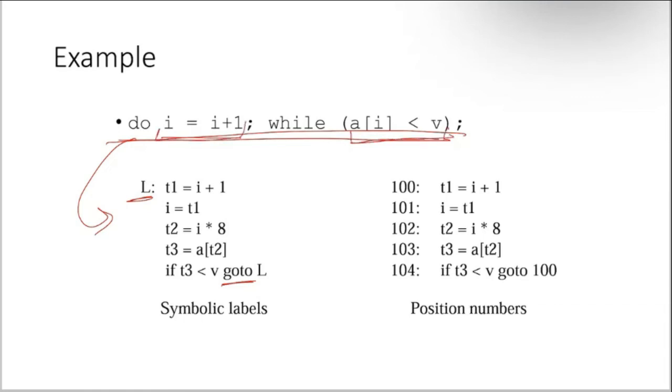First, i plus 1 - we take a temporary variable t1 which stores the result of i plus 1, then this result needs to be assigned to i, so we do i equal to t1. Then t2 is i into 8.